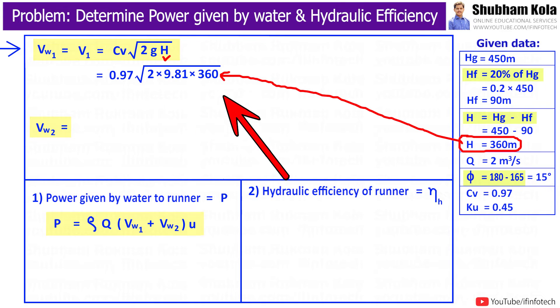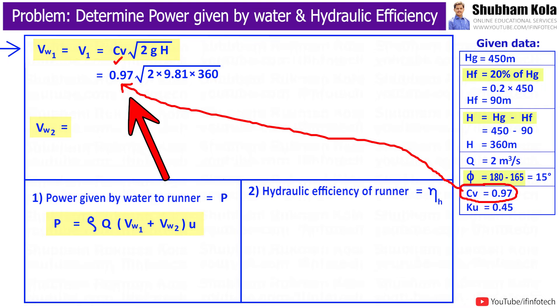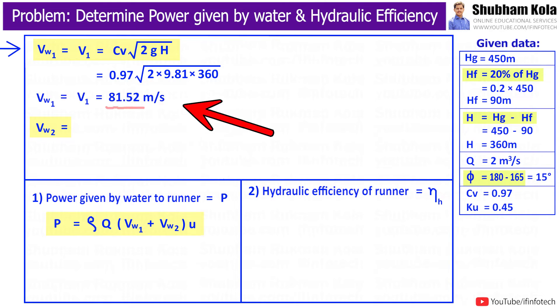Therefore, value of H, i.e., net head provided in given data, which is equal to 360 meters. Coefficient of velocity Cv equal to 0.97, and the numerical value for acceleration of gravity g is 9.81 meters per second squared. So this will give me the value of velocity of jet V1 as 81.52 meters per second. From here, we got the value of Vw1.